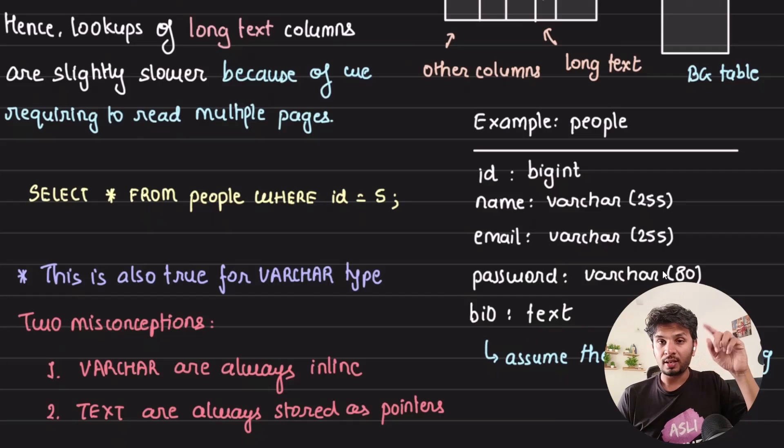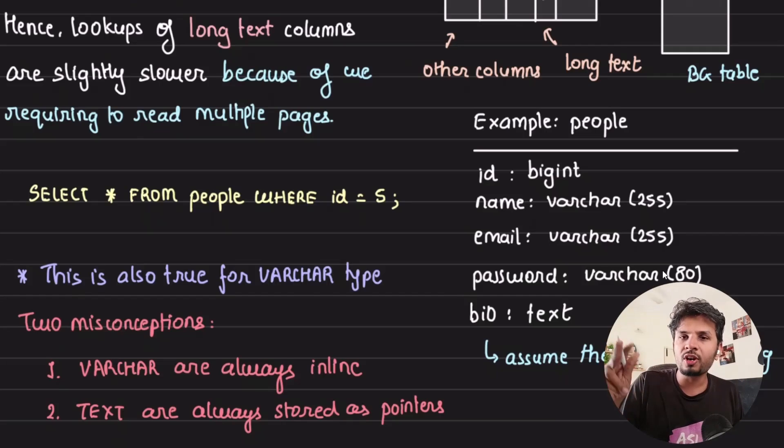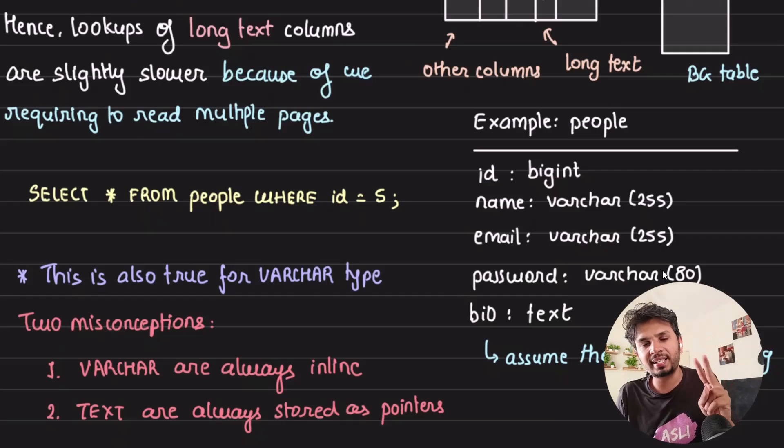One key thing is whatever we discussed about text holds true for varchar also. You can have a varchar column of length 10MB. Obviously that is not stored inline. So not all varchar are stored inline, and not all text are stored as separate pages as pointers. These are very common misconceptions that exist. So no crude generalizations, always go through your database documentation.